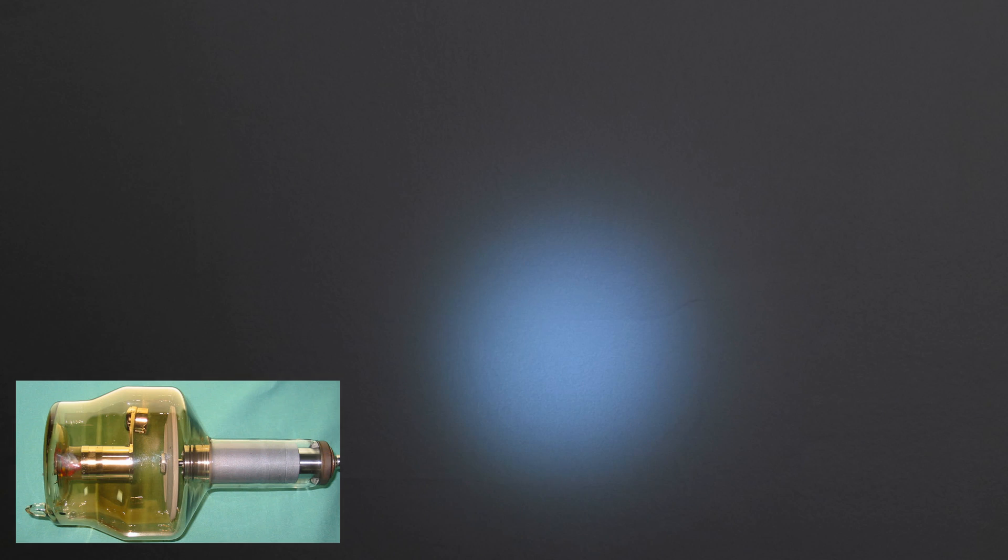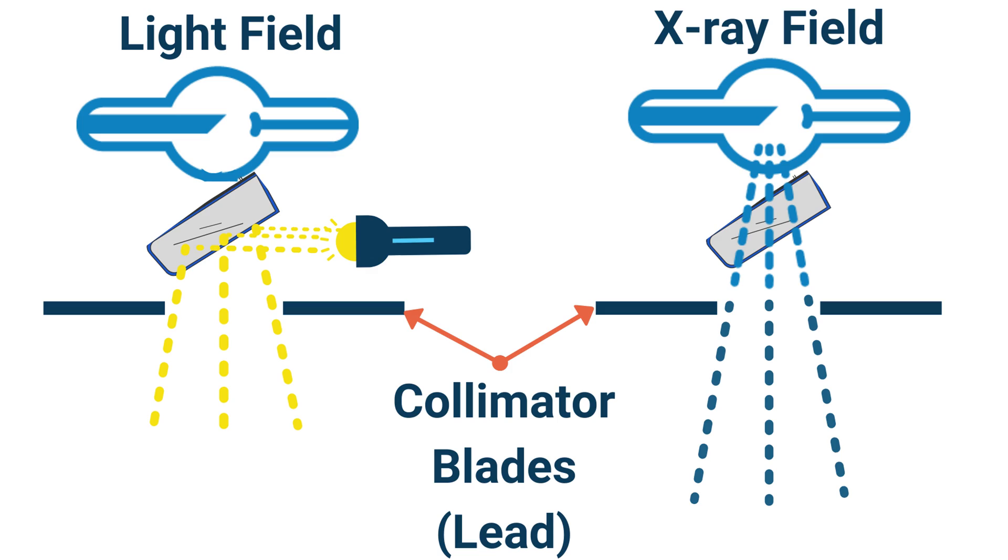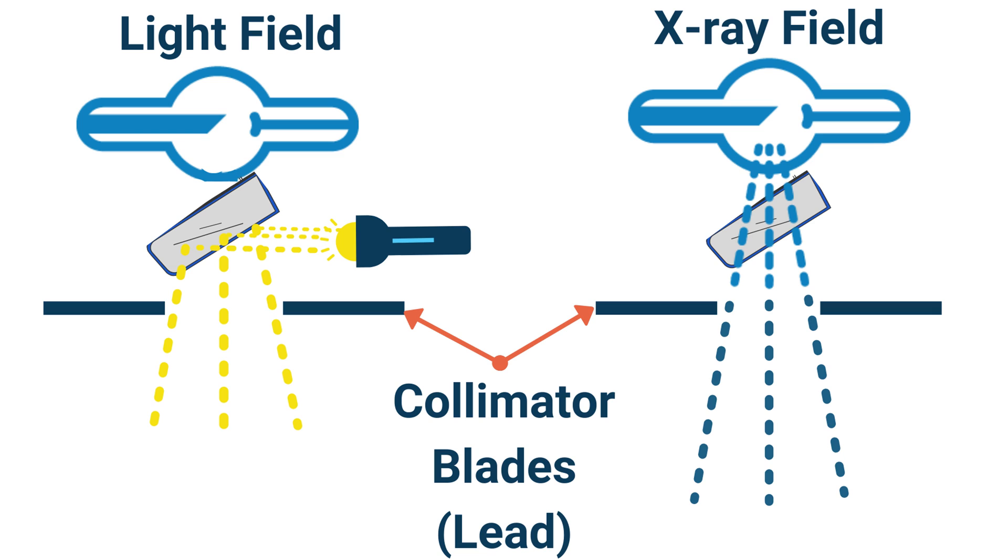Additionally, on an x-ray system, there is a light that comes in from the side and then a mirror projects that light down onto the patient. That way you can use the light field in order to determine where your x-ray field is going to irradiate the patient.